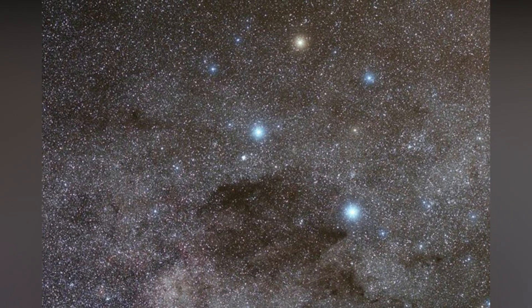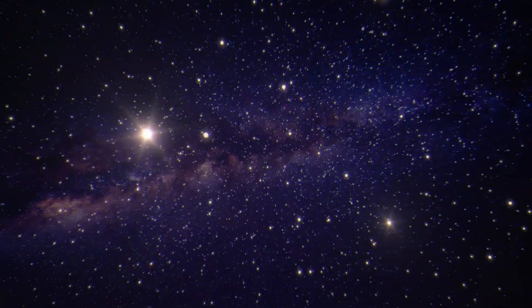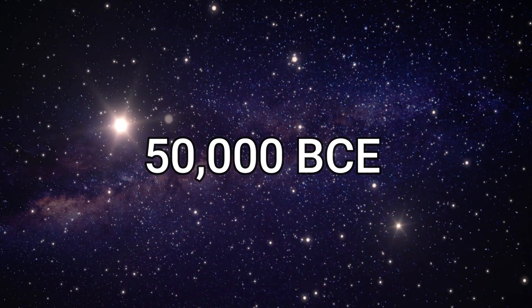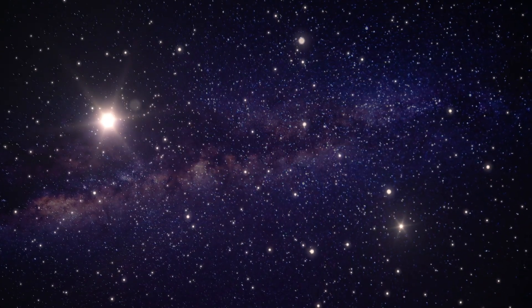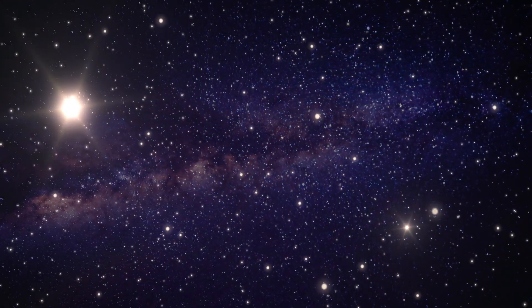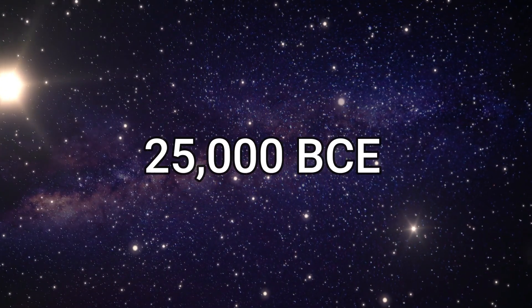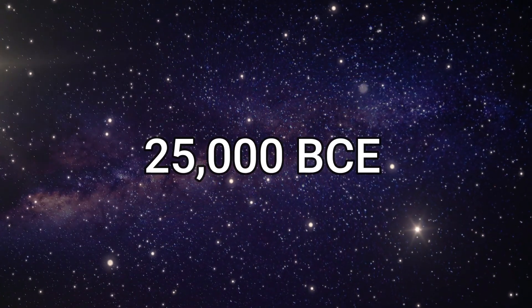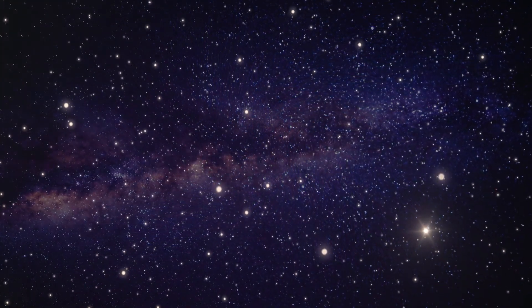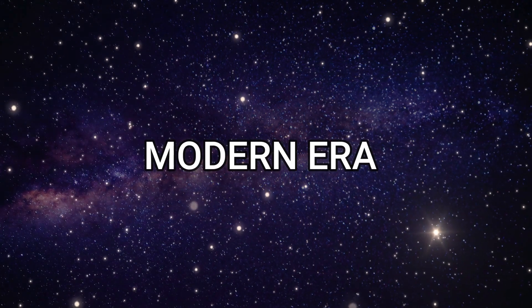Try to determine which of the three positions is most similar to what you're seeing when you look at the night sky. If the Big Dipper and Southern Cross are positioned as in the first choice, you are at approximately 50,000 BCE. If it is the second option, you have been transported to around 25 BCE. If it's the third option, you're in the modern era.